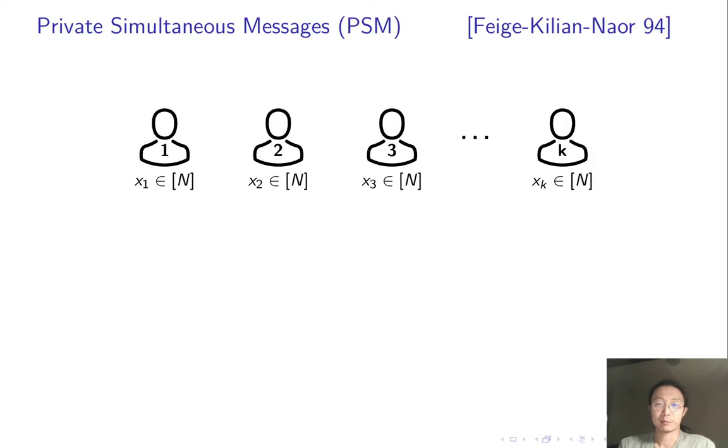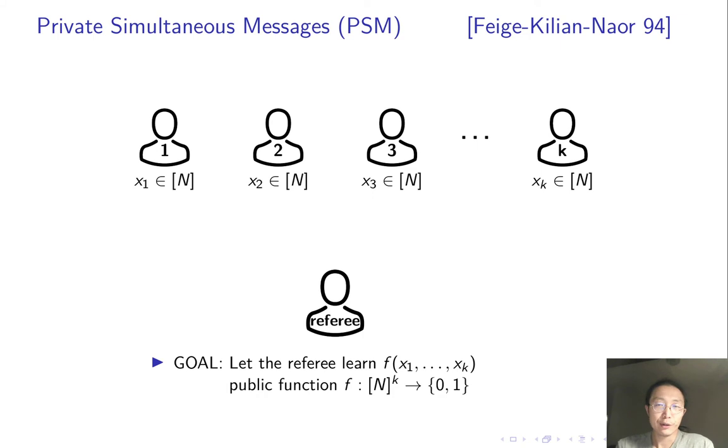What is PSM? It means private simultaneous messages. There are k parties, each has an input. Say the input space is of size n. There is a referee. The goal is to let the referee learn the output of a public function evaluating on all the inputs after receiving a message from each party.